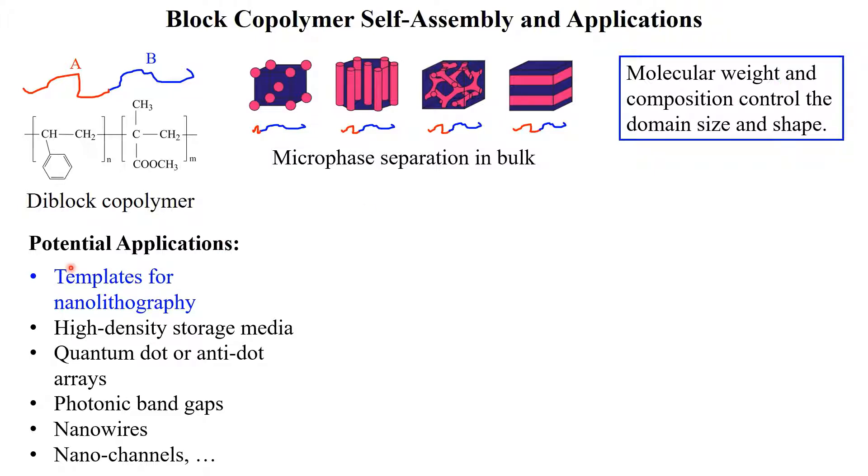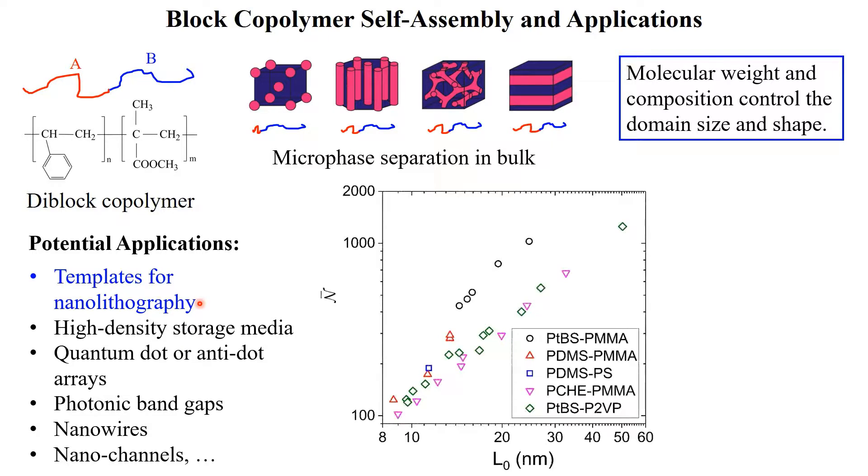Block copolymers have great potential applications in nanotechnology. An example is to use block copolymers as templates in nanolithography, which currently require well-ordered nanostructures with sub-10-nanometer domain sizes. This is typically achieved by using low molecular weight diblock copolymers that have strong repulsion between the two blocks. While decreasing the copolymer molecular weight gives smaller domain sizes, it also leads to increased fluctuations, which are undesired and currently limit the application of block copolymers in nanolithography.